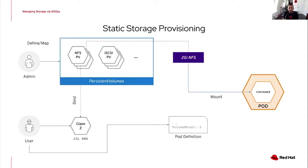In a static storage provisioning paradigm, an admin predefines persistent volumes ahead of time — an NFS persistent volume with the IP address of the NFS server, iSCSI PVs with iSCSI target information, and so on — creating a pool of storage. The end user just says: I need two gigs of read-write-many storage. The first persistent volume that satisfies that option wins and gets mounted to the pod.